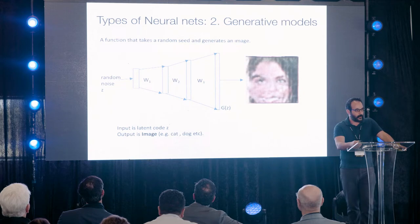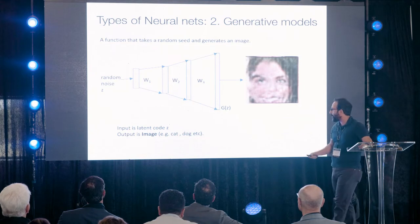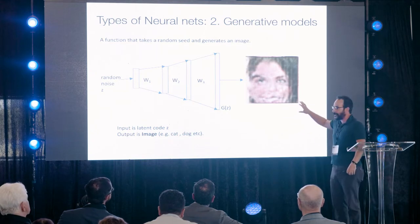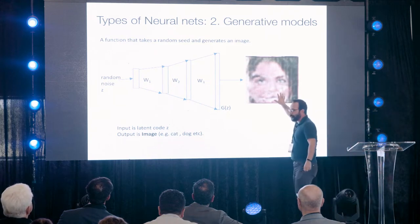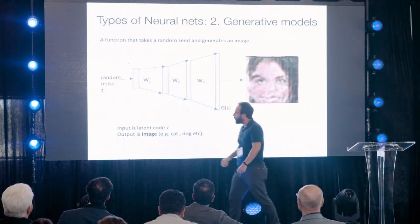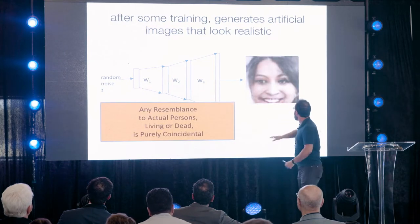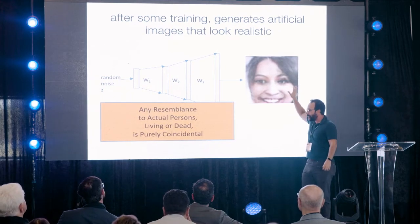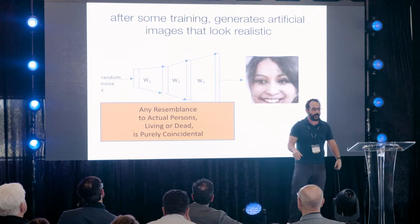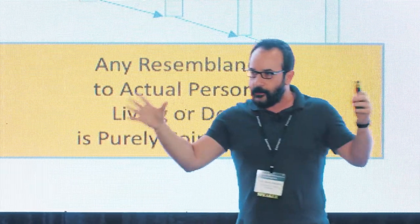The networks I'm talking about today take a few inputs — like 100 numbers called Z — and generate an image. It will dream of an image. Initially it looks somewhat like a face, but as you train the internal weights, it becomes better and better, eventually producing a face that looks pretty realistic. This is not a real person — it's just a dream of a generator with 100 knobs set in random positions.